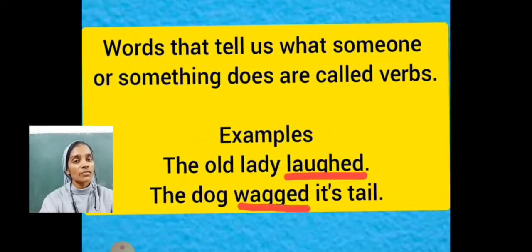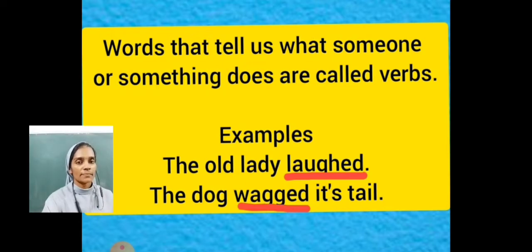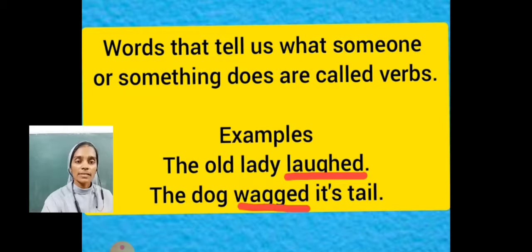Verbs are the words that tell us what someone or something does. The verb describes what the subject is doing in a sentence. We can call them doing words or action words. All the action words are called verbs.